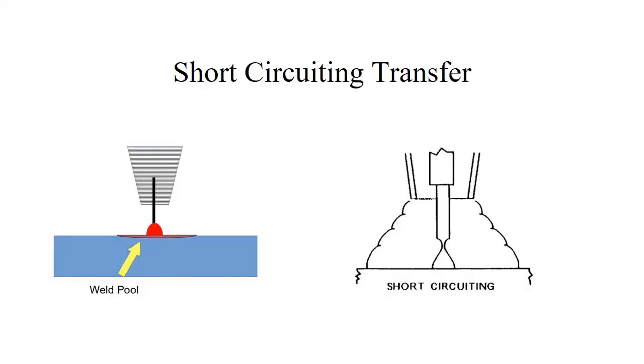The first one we're going to talk about is short-circuiting transfer. This process kind of has a bacon frying type of sound, I guess is the closest thing I could come to describing it. [Welding demonstration sound] That was short-circuiting transfer. Like I said, it kind of has a frying bacon sound, or like you're cooking something.